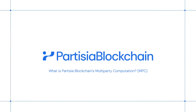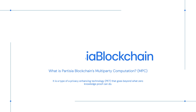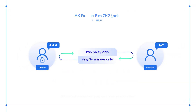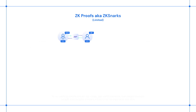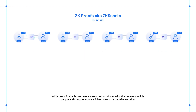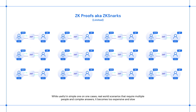What is Partizia Blockchain's multi-party computation? It is a privacy-enhancing technology that goes beyond what zero-knowledge proof can do. ZKP is limited to two parties, giving you a binary yes-or-no answer. While useful in simple one-on-one cases, real-world scenarios that require multiple people and complex answers make it too expensive and slow.